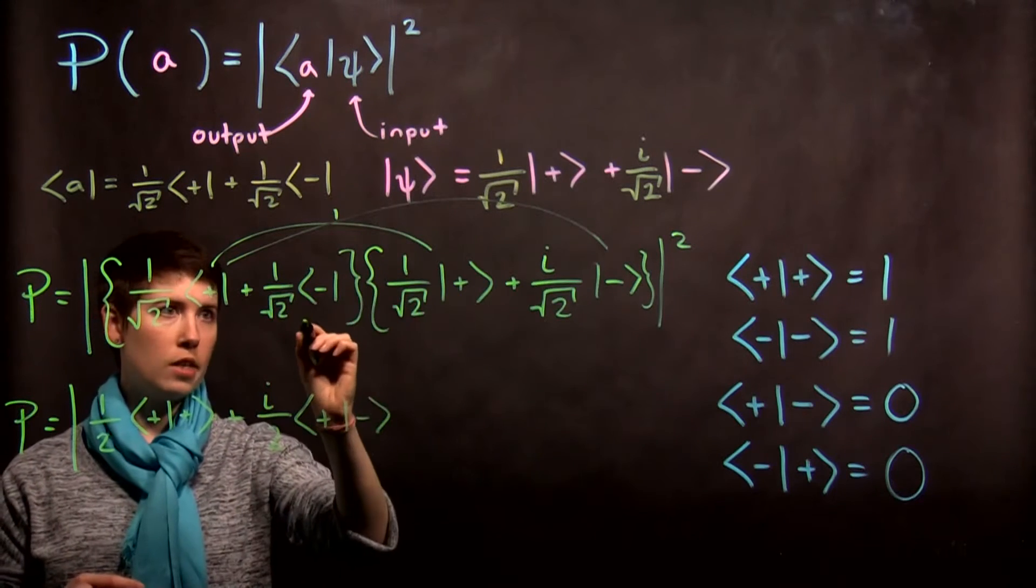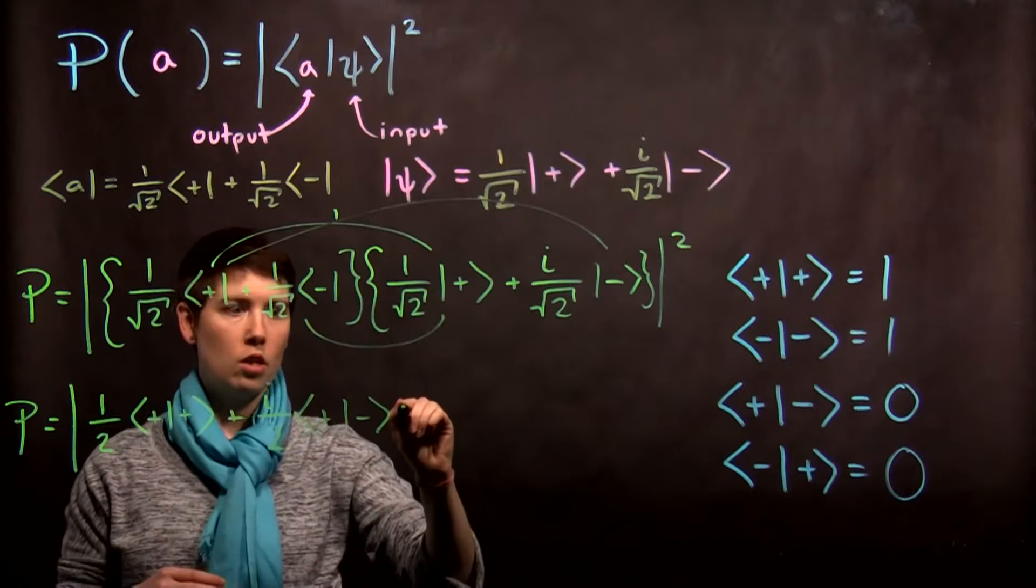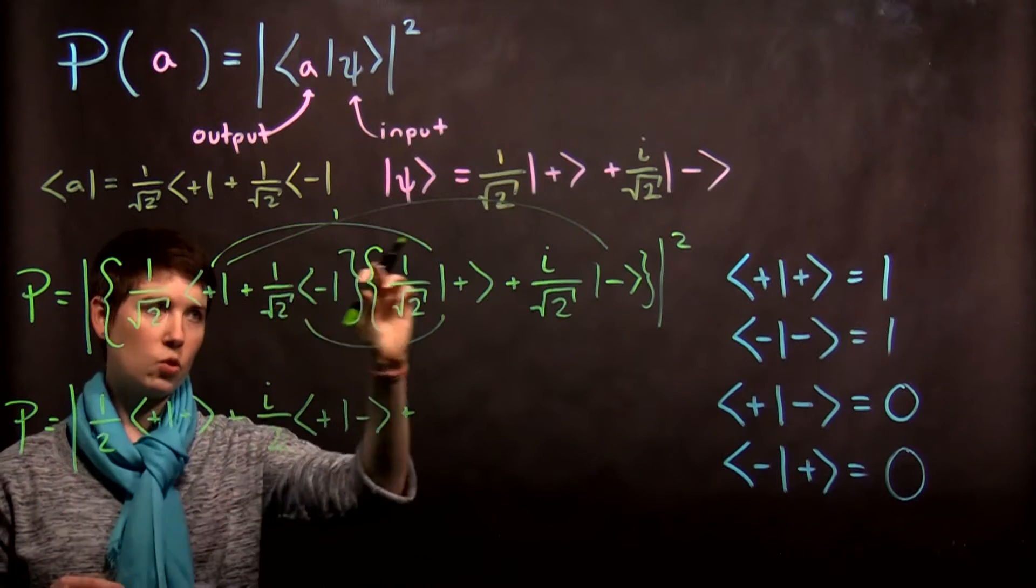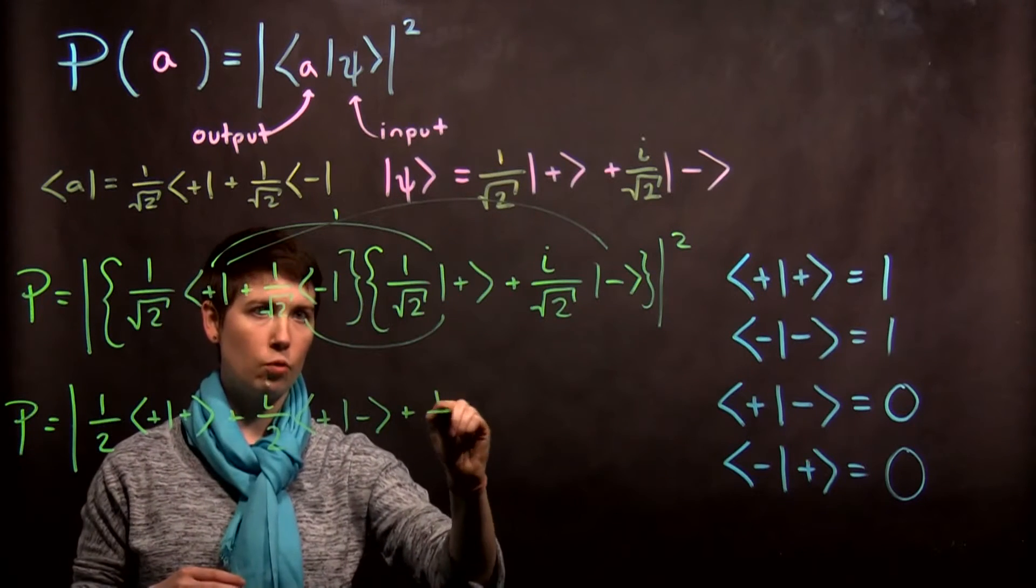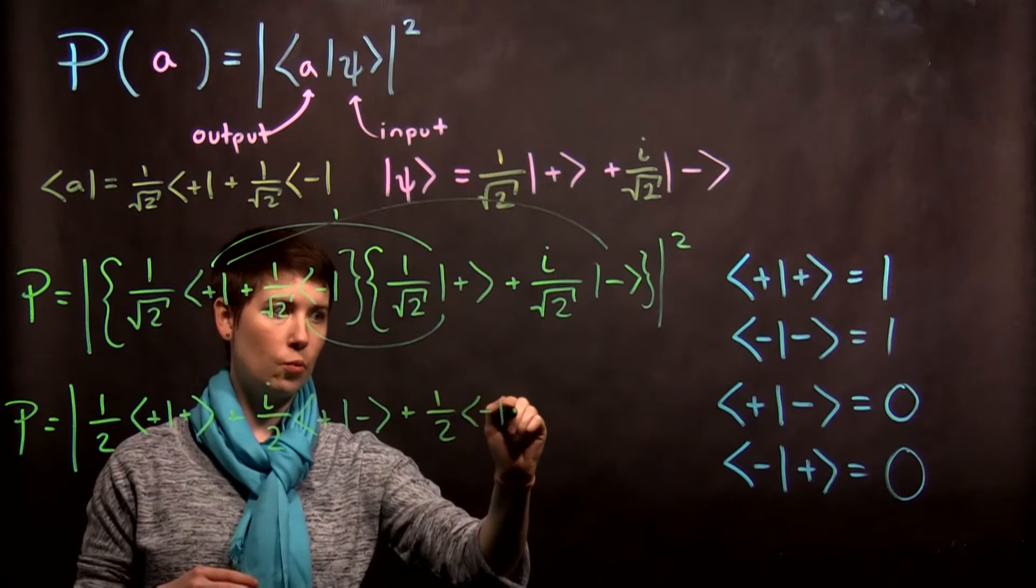Then my third one is going to be again, one over square root of two times itself, one over two, minus with a plus.